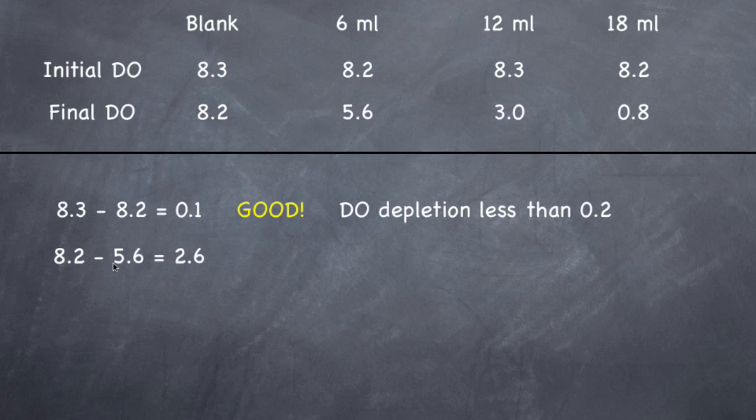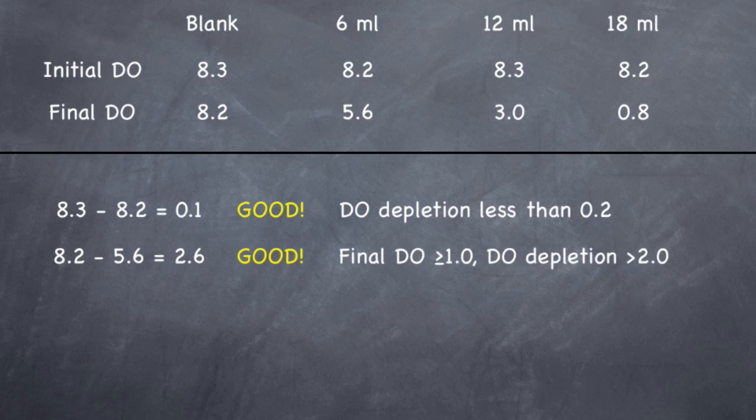So 8.2 minus 5.6 initial minus final equals 2.6. Is that a good sample? Yes. The final DO, this number, was greater than or equal to 1, and the DO depletion, this number, was greater than or equal to 2. So this sample is okay. We don't have to cross this sample out.